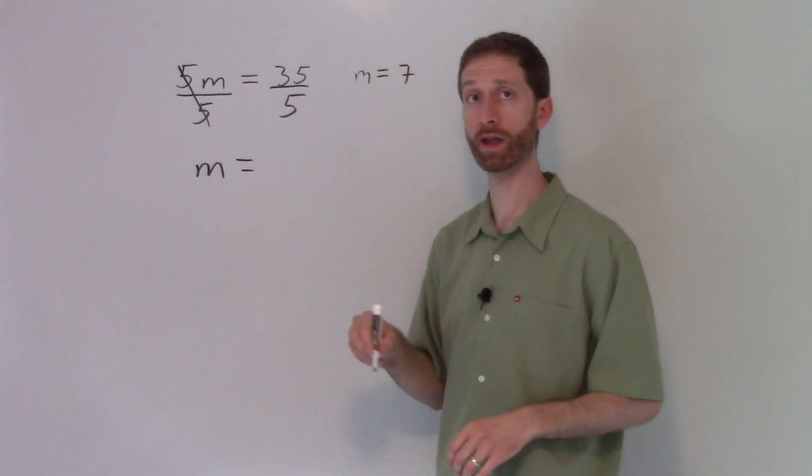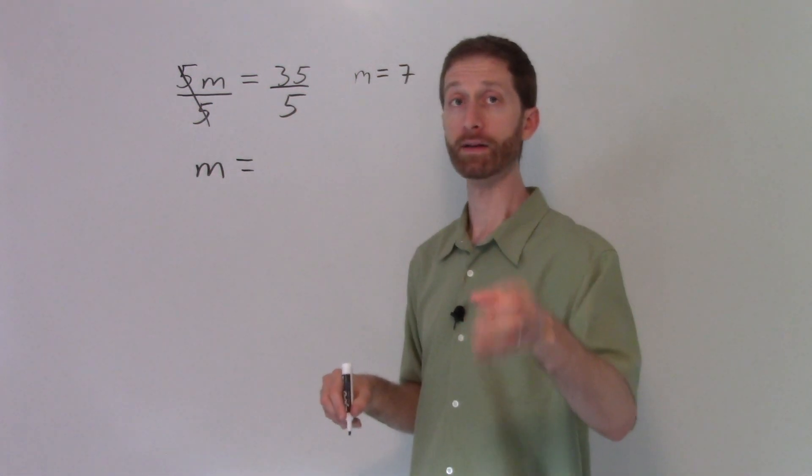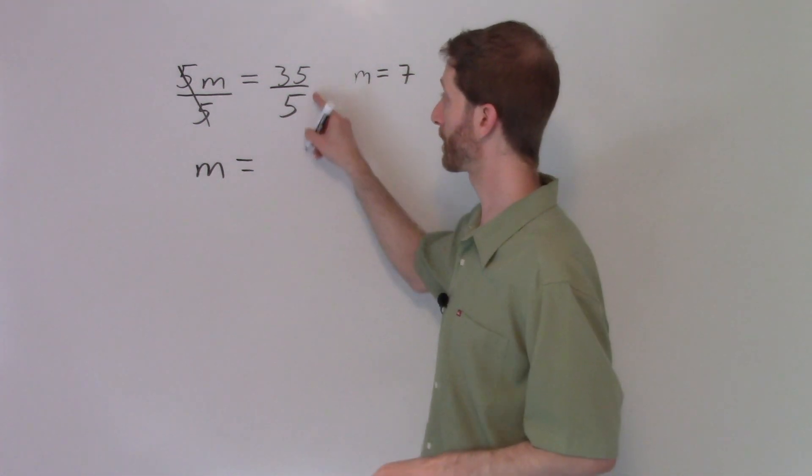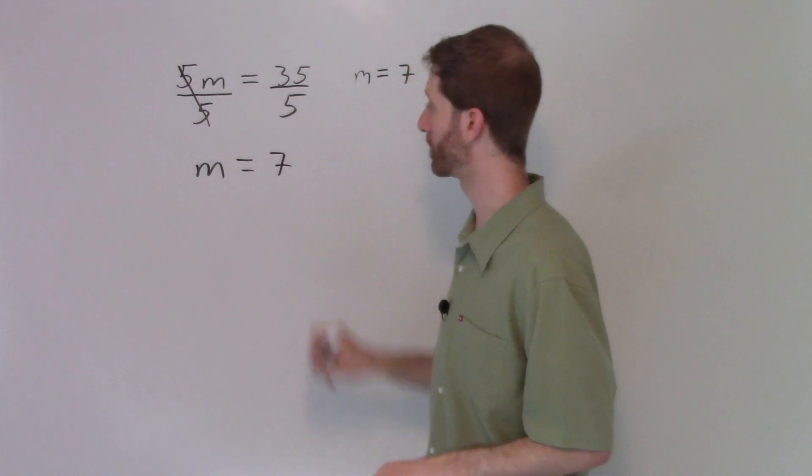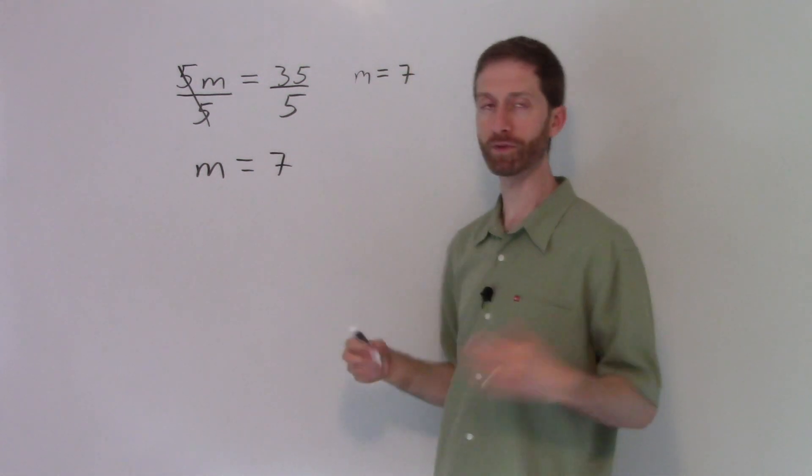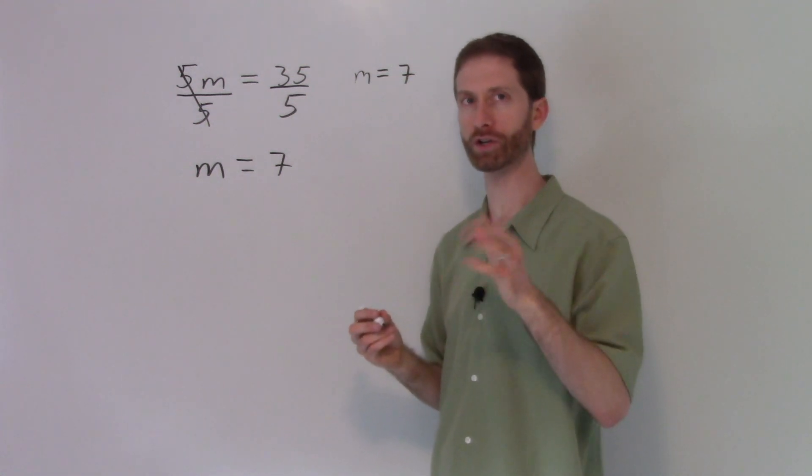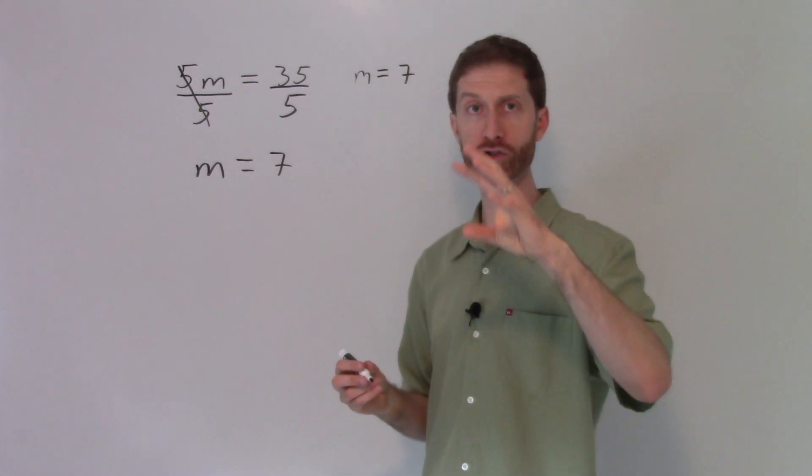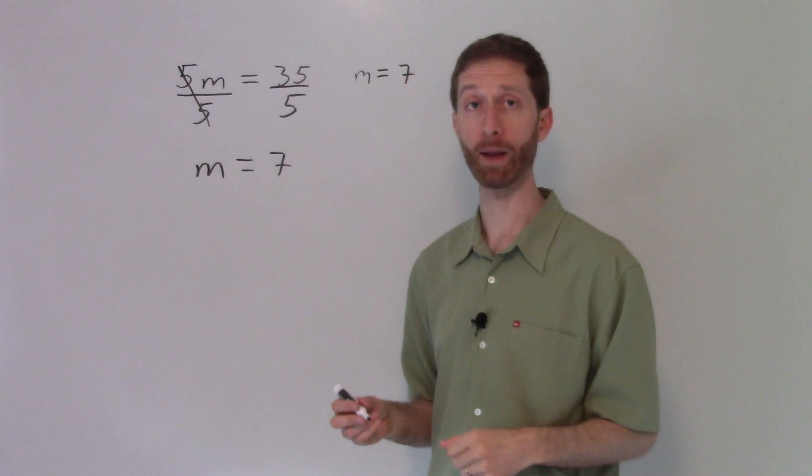now let's do our work over here on the right hand side, focusing in on that. 35 divided by five is seven. And that's our answer, which we knew from some mental math before. But I want you to understand the how and the why for solving equations by undoing operations.